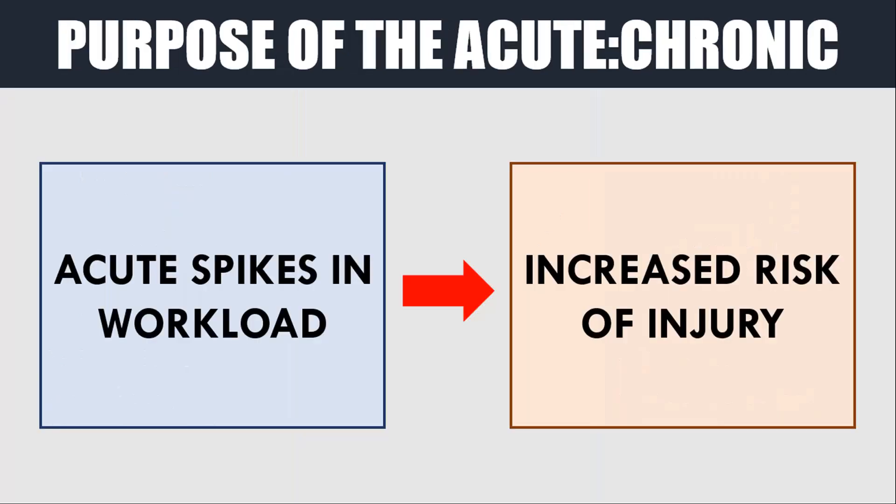So what does the acute to chronic workload ratio actually mean to athletes and coaches? What research has found is that when we have spikes in workload we tend to have an increased risk of injury. That is, when our acute workload is much higher than our average chronic workload, we are more likely to get injured during that period of increased workload.